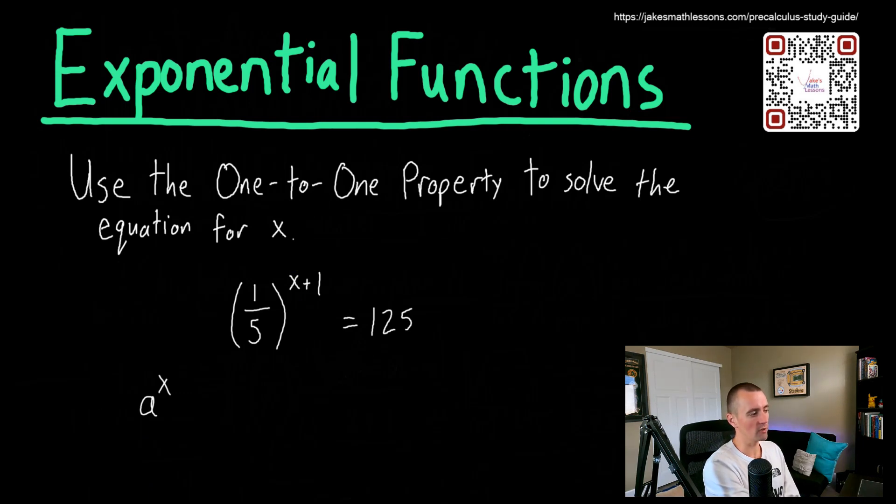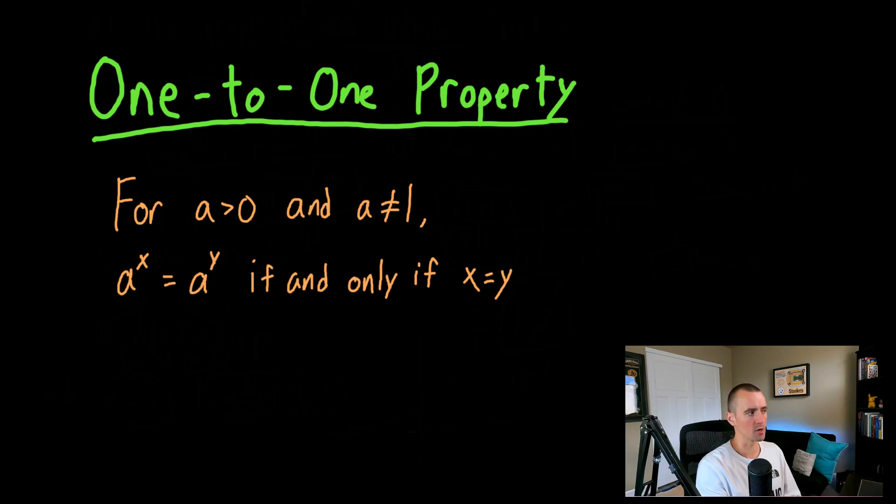And solving an equation that uses an exponential function like this can be done using the one-to-one property. So really quick, like I said, I'm not going to go into too much detail, but the one-to-one property basically says, for any a, besides one, any positive number a, so any number greater than zero, except for a equals one, a raised up to some x power only equals a raised up to some other y power if x equals y.